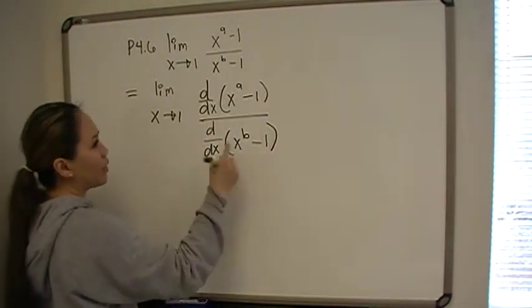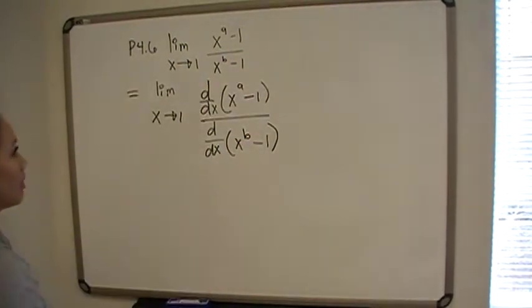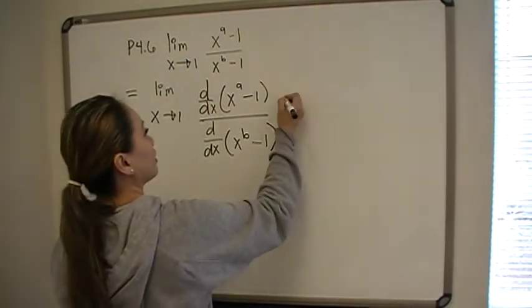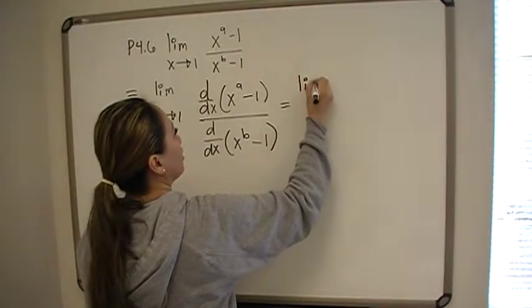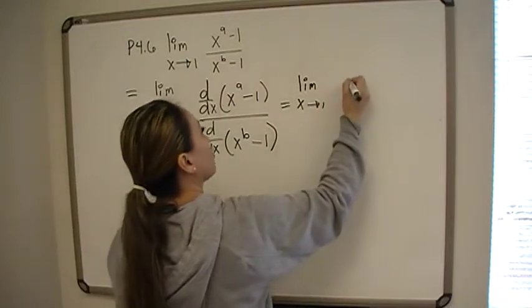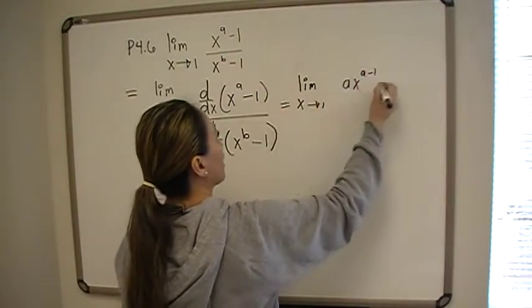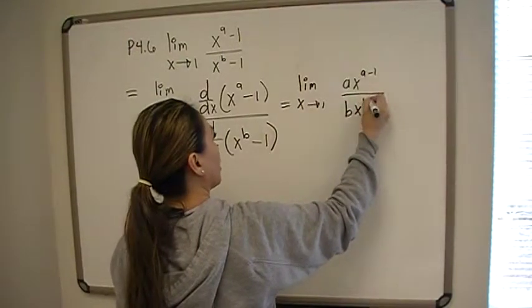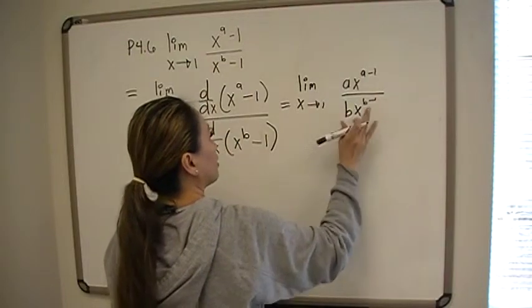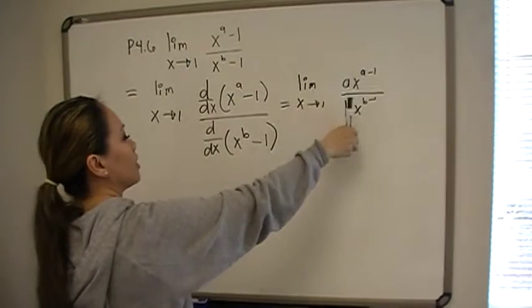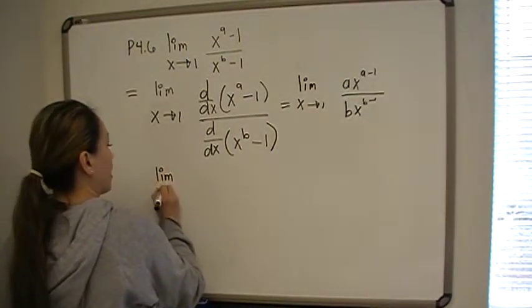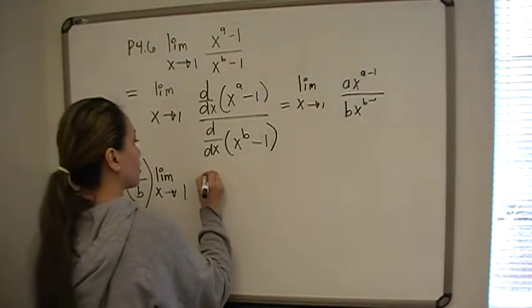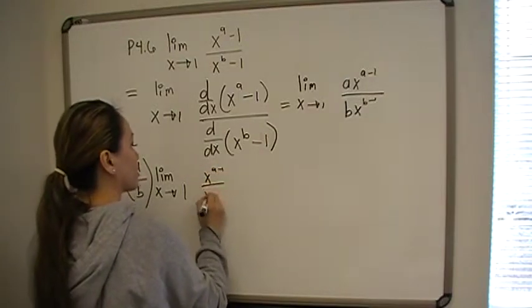Let's take the derivative. I don't have room - in math, good form is to go down, but obviously my whiteboard space is limited, so I'm going to use poor form and go to the side. That is going to equal the limit as x approaches 1: derivative of x to the a is ax to the a minus 1, derivative of 1 is 0. Derivative at the bottom is bx raised to the b minus 1, and derivative of 1 is 0. We can simplify using limit laws and pull the coefficient out.